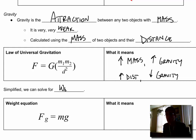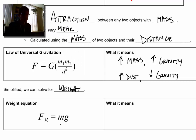Simplified, we can solve for weight. Remember weight is the gravity, the force of gravity acting on a body. So if we know the gravitational acceleration of an object times its mass, we can find force in newtons.